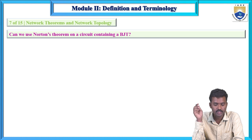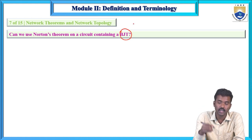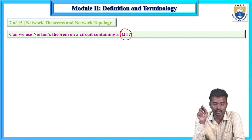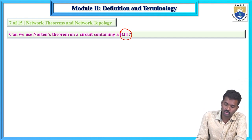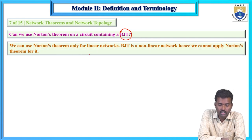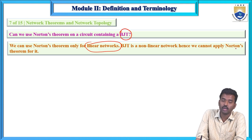Seventh question: Can we use Norton's theorem on a circuit consisting of a BJT? BJT is a non-linear element. For non-linear networks, we cannot apply superposition theorem, Thevenin's theorem, reciprocity theorem, or Norton's theorem. Network theorems can only be applied to linear networks, not non-linear networks. Since BJT is a non-linear element, we cannot apply Norton's theorem to such circuits.